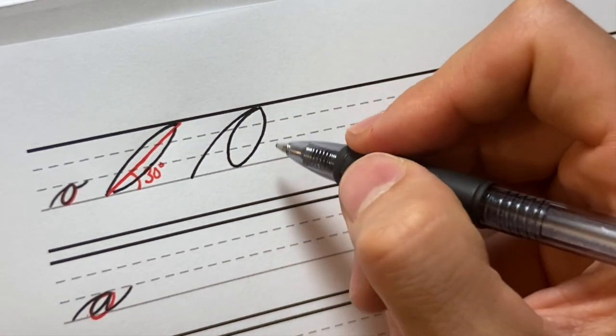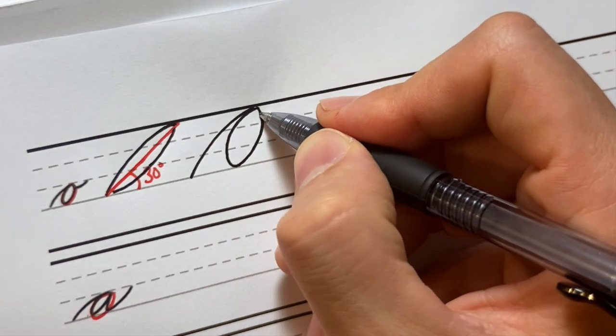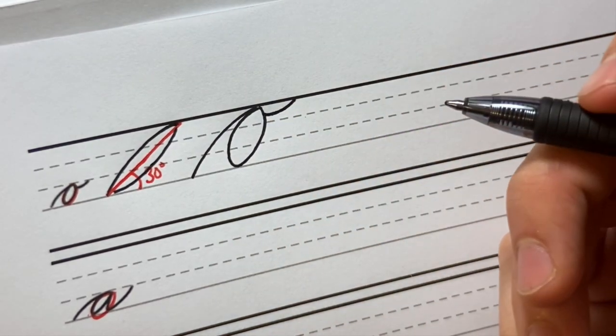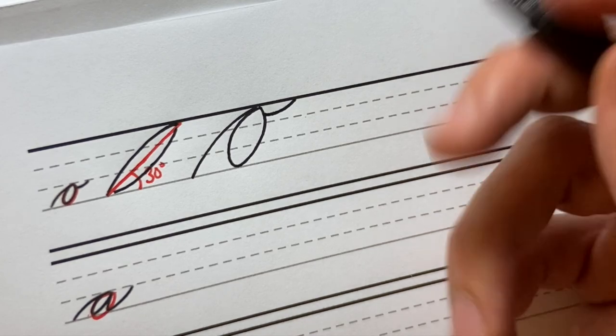And then just like our W, we're going to exit from the top. So just come down a little bit on that O and do a little curve like that out of the letter.